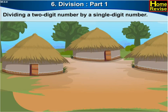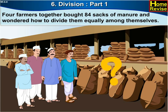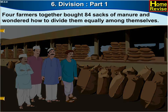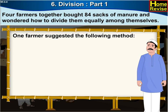Dividing a two-digit number by a single-digit number. Four farmers together bought 84 sacks of manure and wondered how to divide them equally among themselves. One farmer suggested the following method.